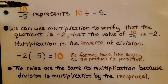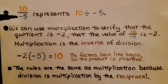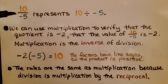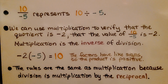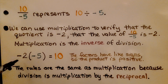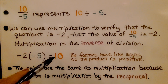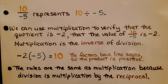Here it's written with a positive 10 for the numerator and negative 5 for the denominator, representing 10 divided by negative 5. We can use multiplication to verify that the quotient is negative 2 — that the value of 10 over negative 5 is negative 2. Multiplication is the inverse of division; they undo each other. Negative 2 times negative 5 is positive 10 — the factors have like signs, so the product is positive. The rules are the same as multiplication because division is multiplying by the reciprocal.